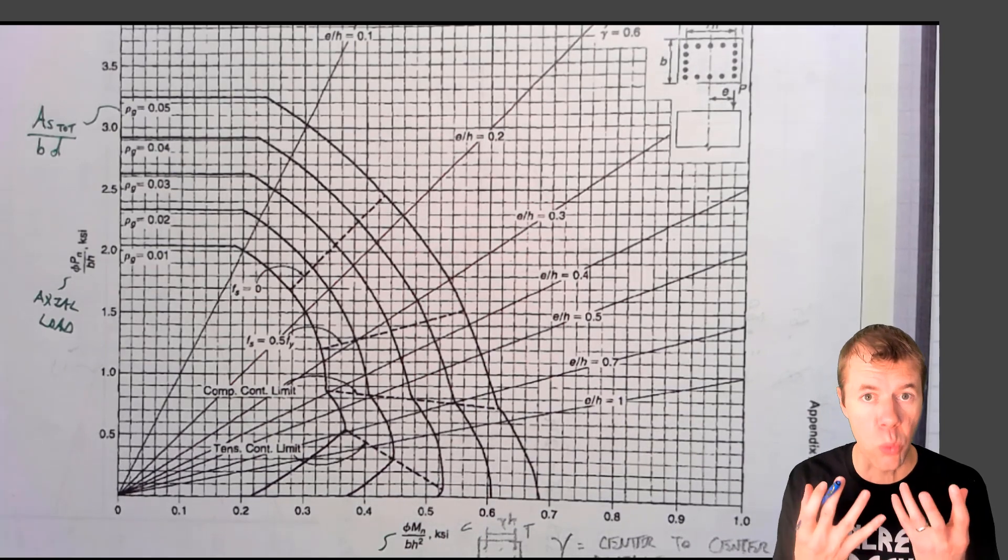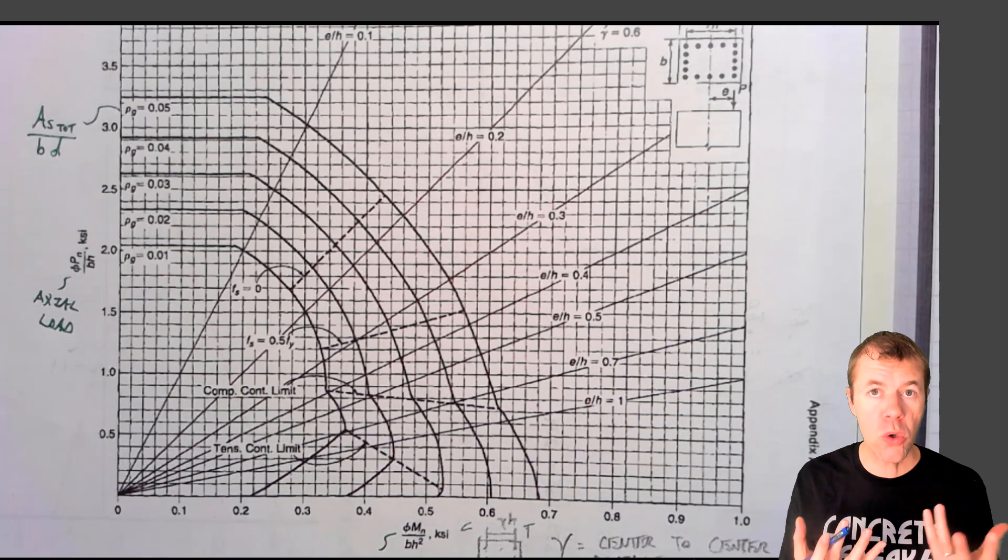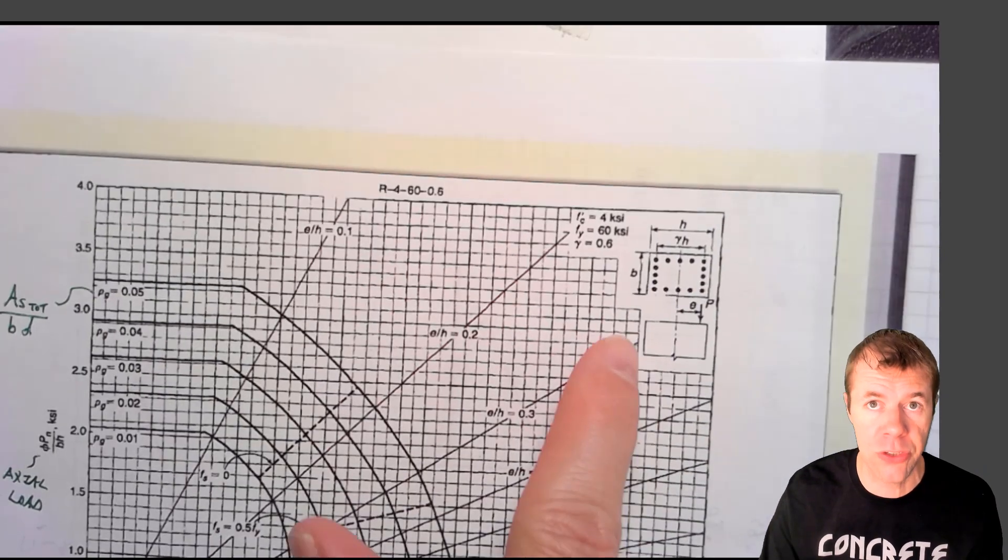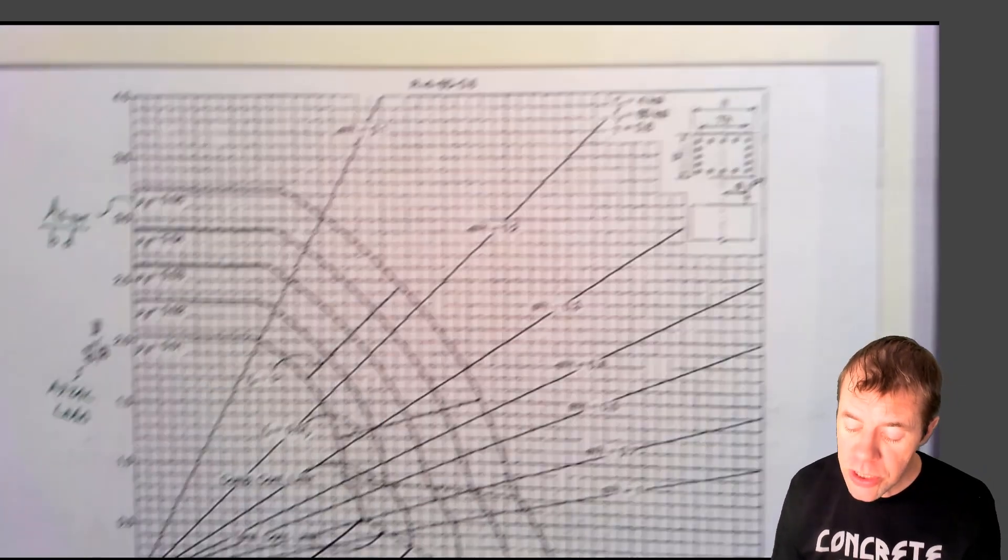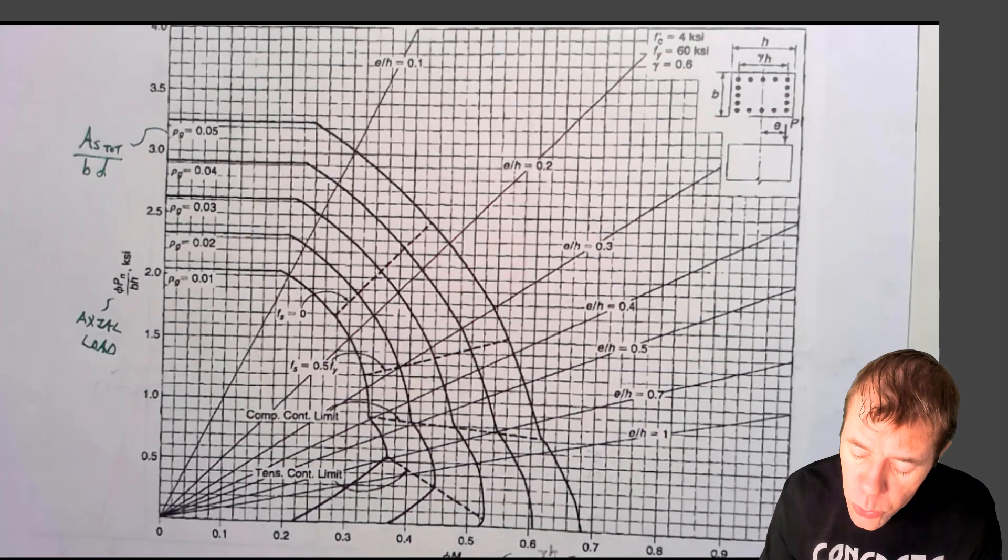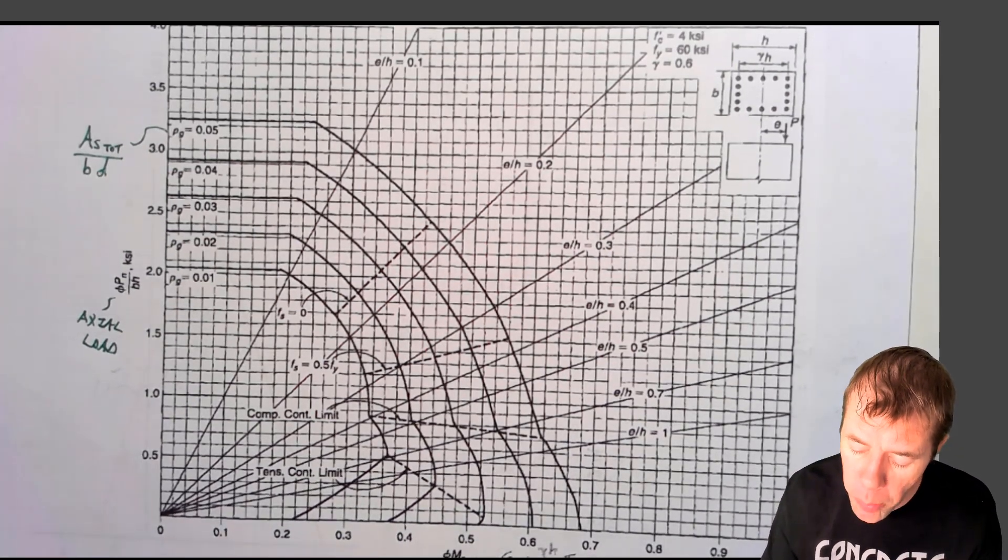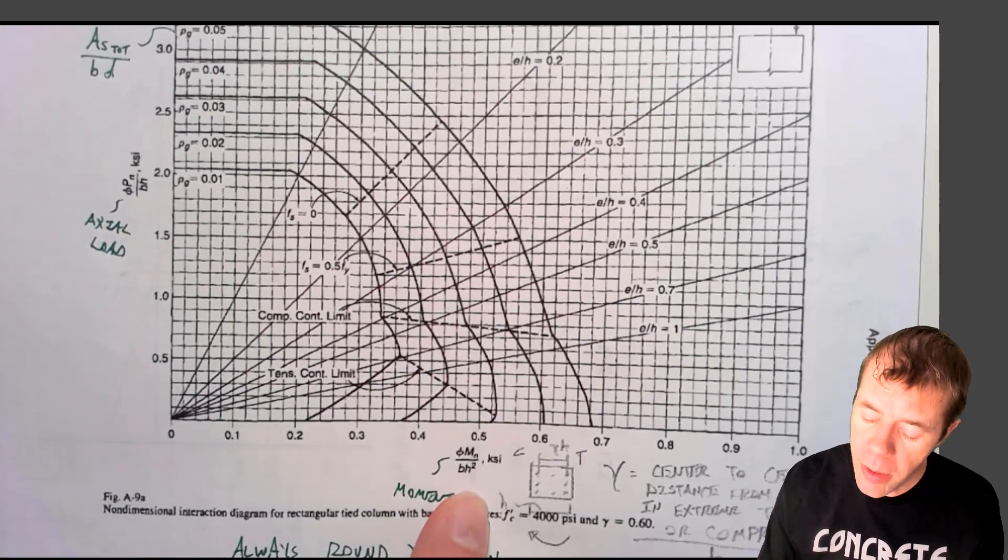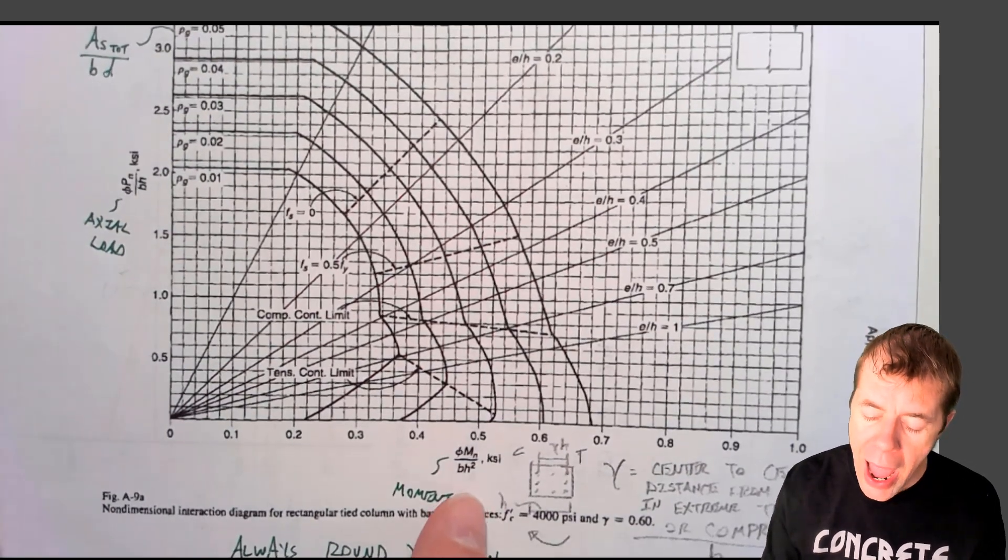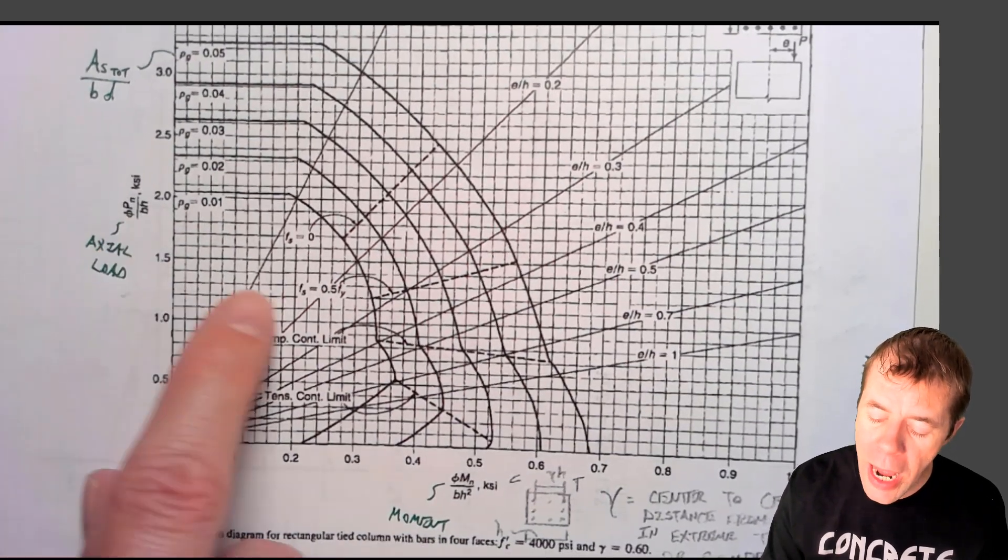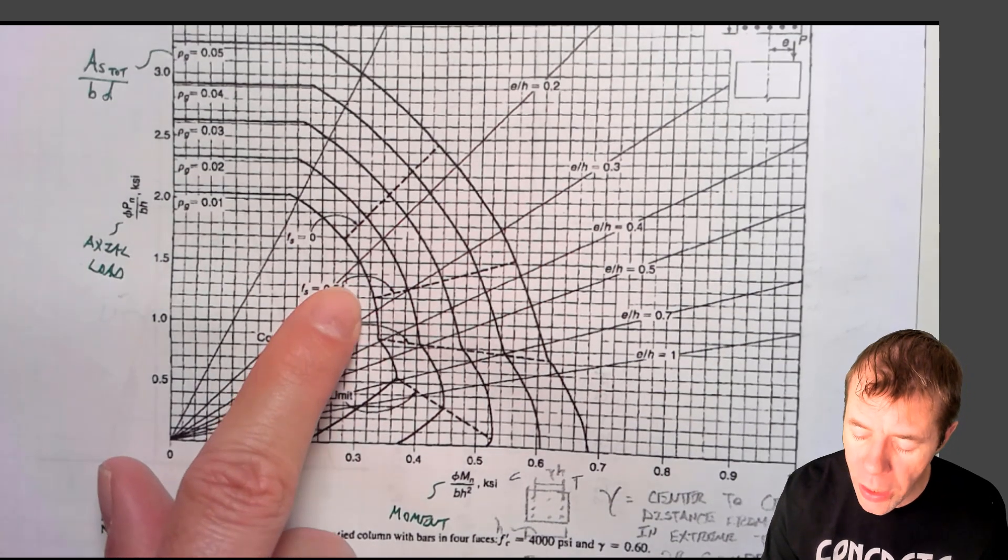Now, I'm going to tell you exactly how these things work. If you have a cross section that fits a diagram, and we'll talk about how you know if it fits, it has to do with this criteria up here. But if you establish that you fit the diagram, then what you have to do is come in here with your moment divided by your cross sectional information, and your axial load divided by your cross sectional information. You'll come in here and you'll plot a point.